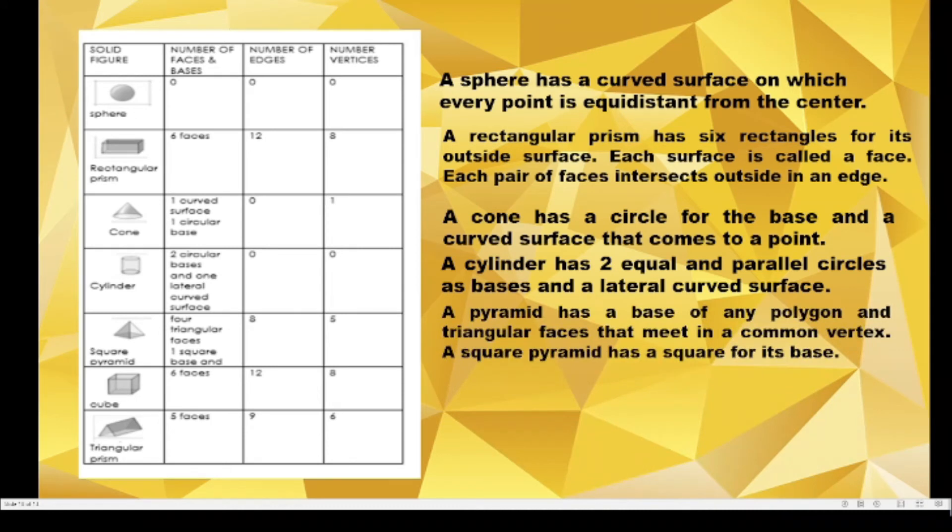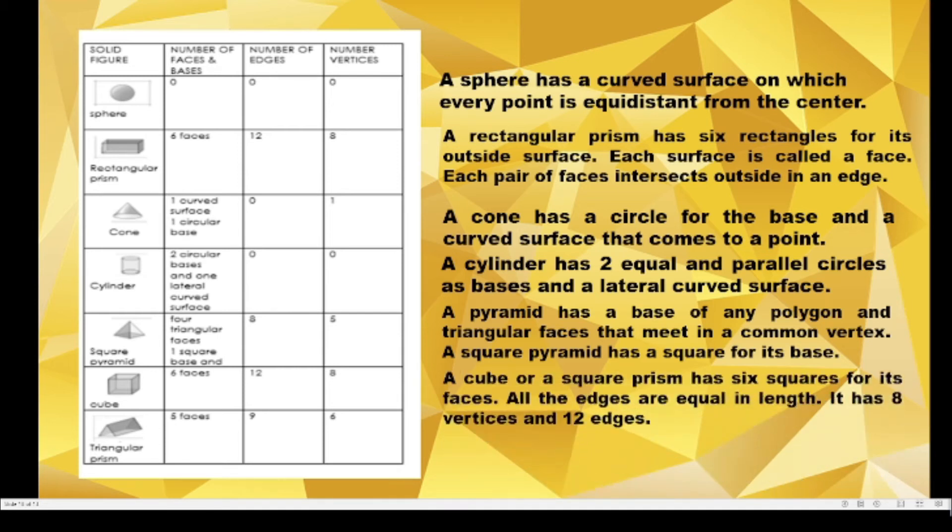While pyramid has a base of any polygon and triangular faces that meet in a common vertex. Square pyramid has square for its base. A cube or a square prism has six squares for its faces. All the edges are equal in length. It has eight vertices and 12 edges. And triangular prism has three rectangular and two triangular faces.